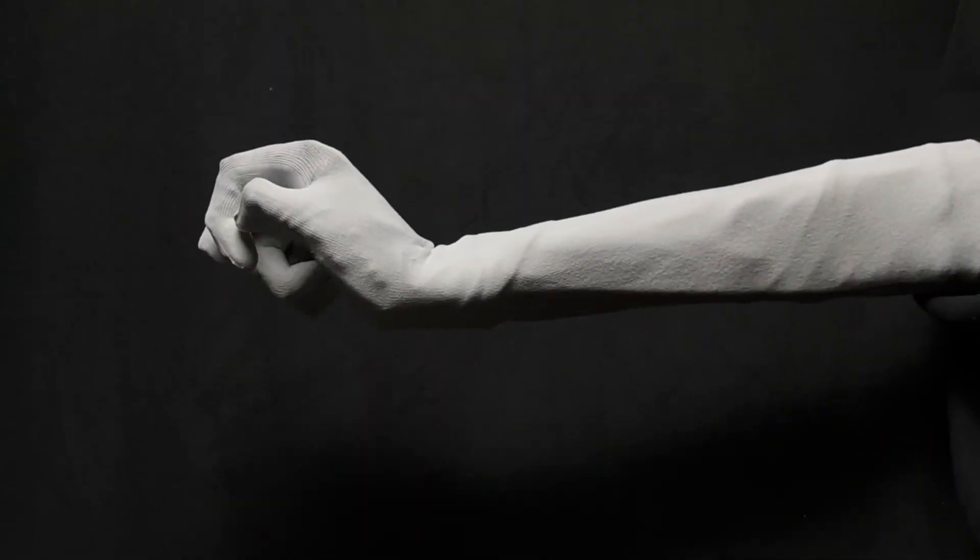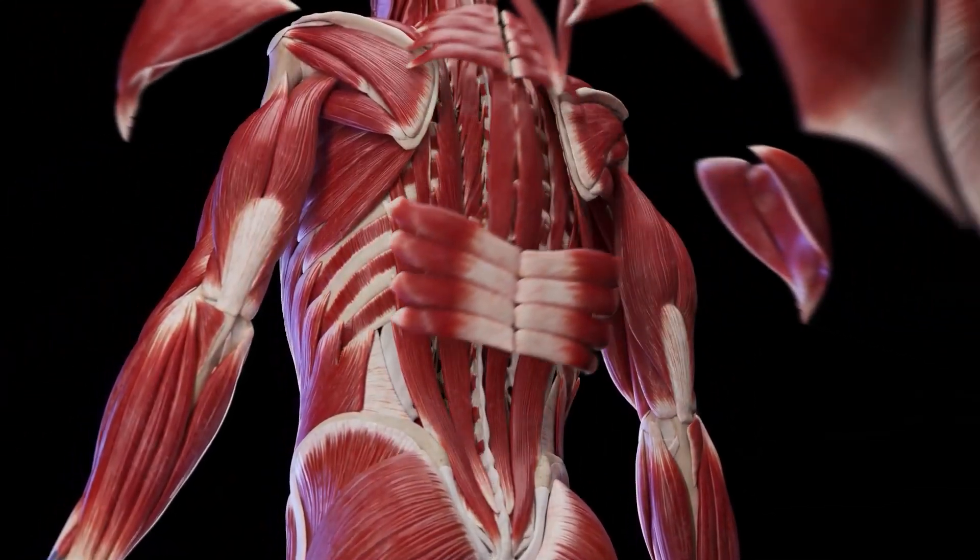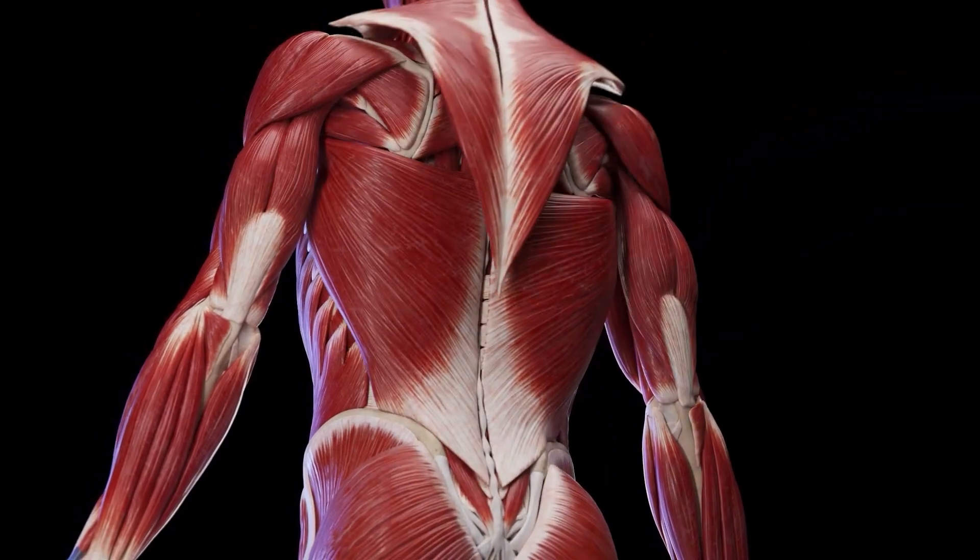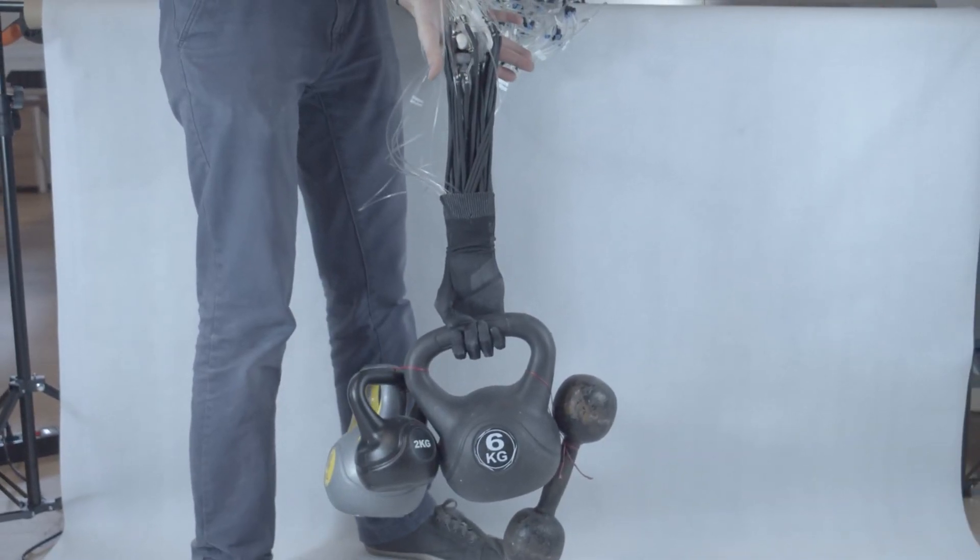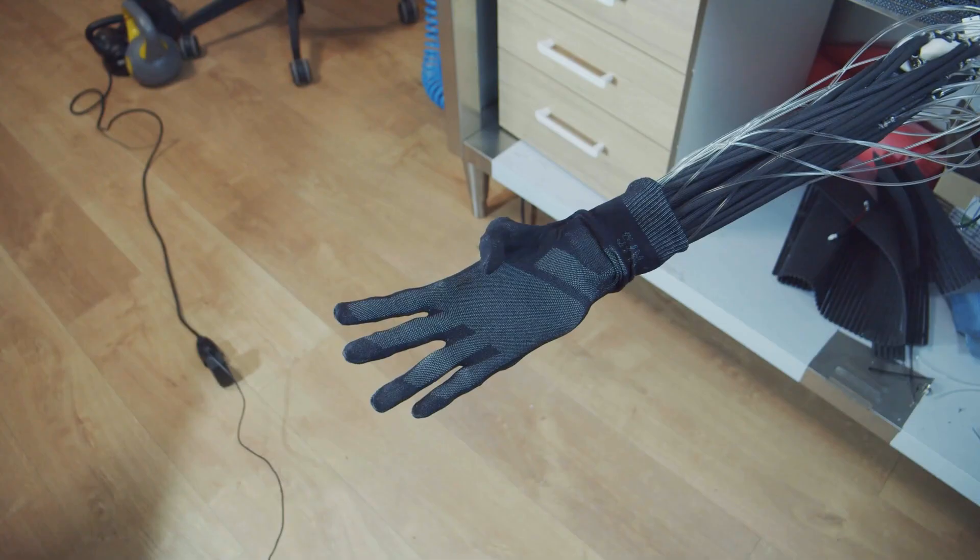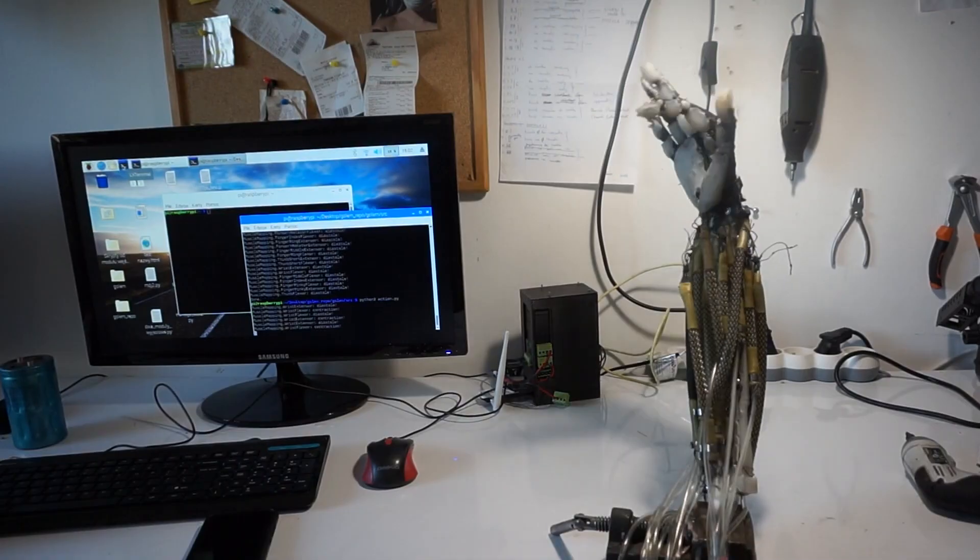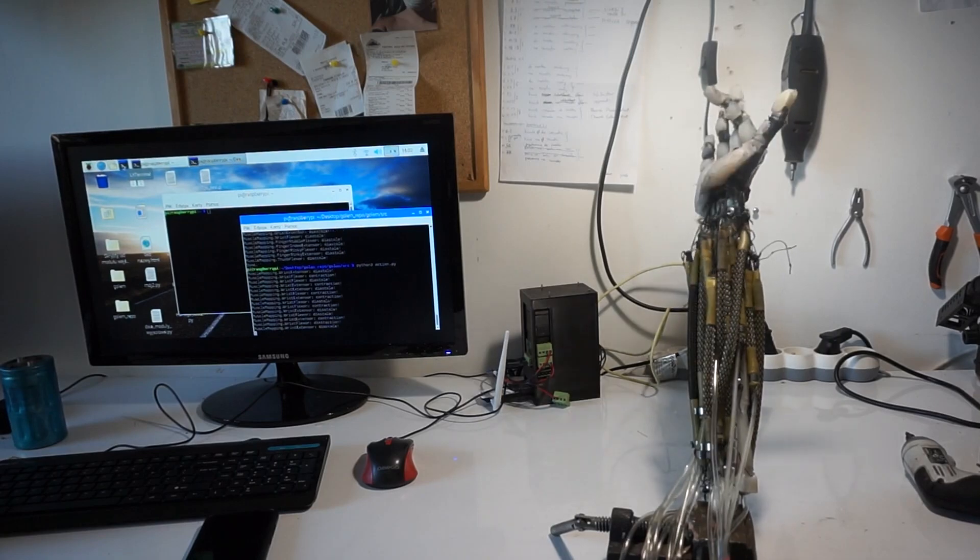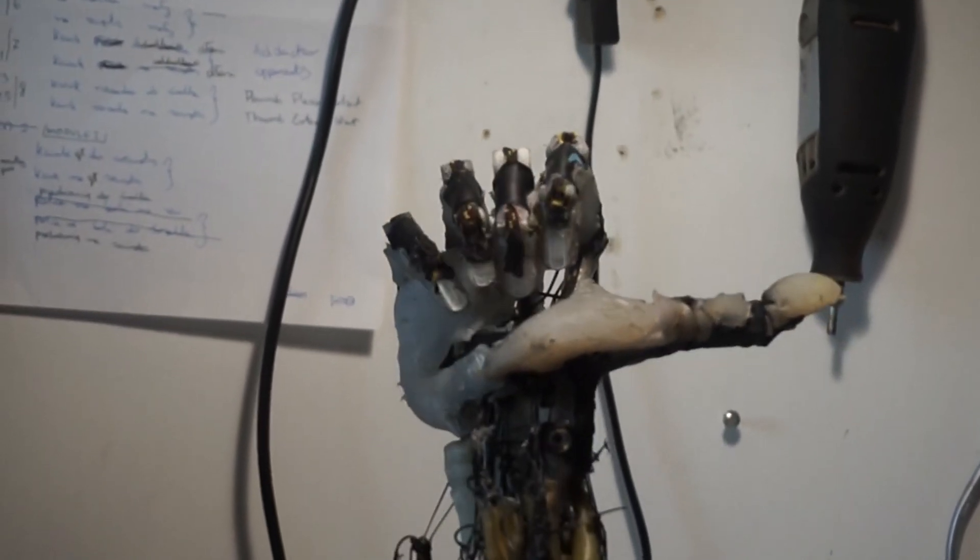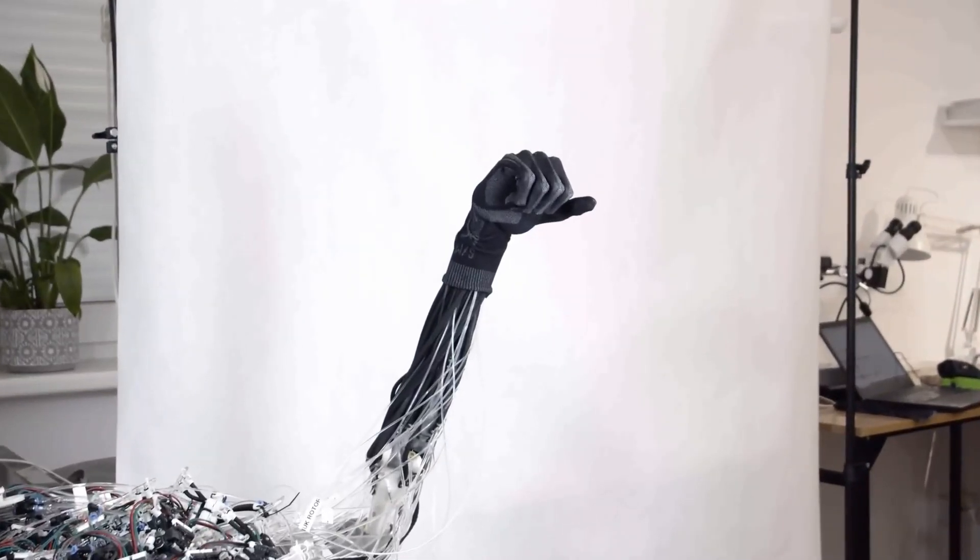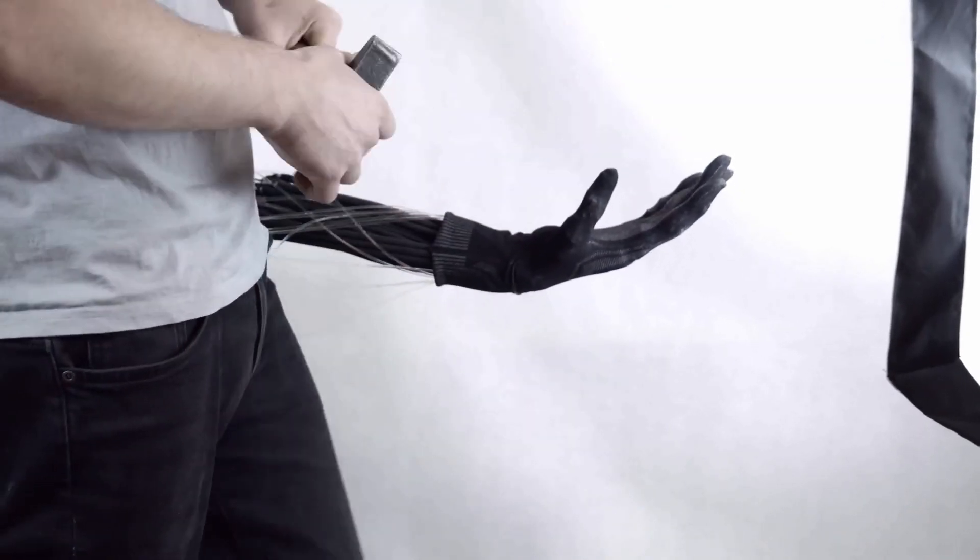Clone Robotics stands out because of how deeply they focus on human-centered design. They've really studied human anatomy and movement to create robots like the Protoclone that can perform tasks requiring fine motor skills and agility. Their use of advanced materials like durable polymers for bones and artificial muscles gives the robots the strength and flexibility needed for realistic movement. What's also impressive is their expertise in AI and robotics. They integrate both to create robots that can adapt to their environment and perform autonomously.